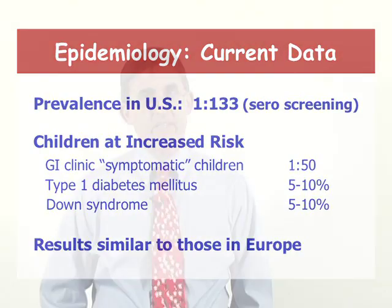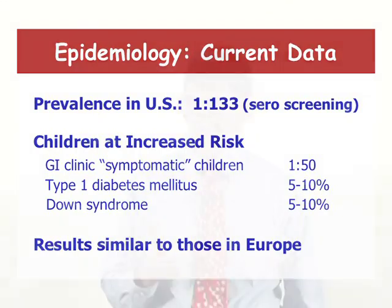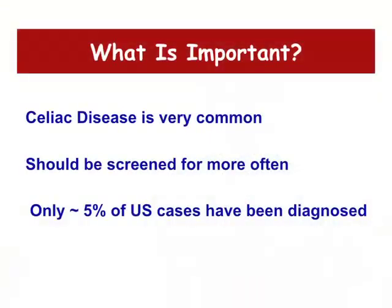Children are at risk as much or even more than adults. In populations of children coming to a GI clinic for abdominal pain, about one in 50 will have celiac disease. In children with Down syndrome, about five to ten percent will have celiac disease. Similarly, about five to ten percent of all children with type 1 diabetes will also have celiac disease.